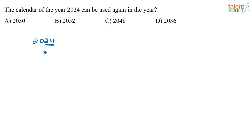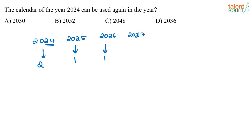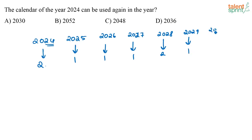2024 is a leap year, so there are 2 odd days. 2025 is a non-leap year, so it has 1 odd day. 2026 is a non-leap year, so it has 1 odd day. 2027 is a non-leap year, so it has 1 odd day. 2028 is a leap year, so 2 odd days. 2029 is a non-leap year, so 1 odd day. 2030 is a non-leap year, 1 odd day.